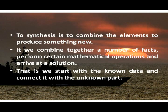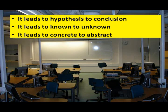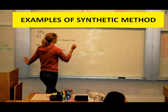In this method, we proceed from known to unknown. We combine together a number of facts, perform certain mathematical operations and arithmetic solutions. That is, we start with the known data and connect it with the unknown part. It leads from hypothesis to conclusion, from known to unknown, and from concrete to abstract.